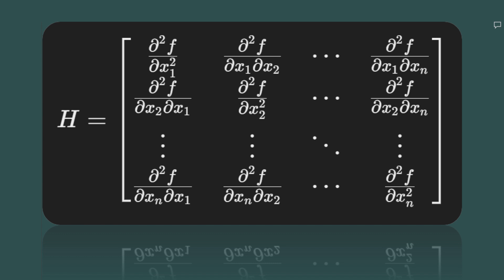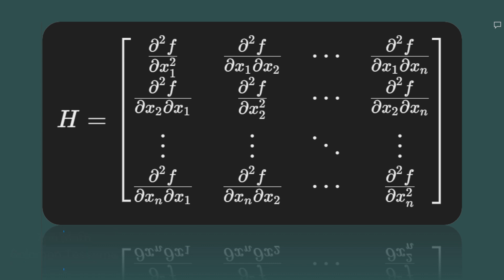Hi everyone, and welcome to this tutorial. Today, we're diving into the Hessian matrix, a powerful mathematical concept that captures second-order derivatives of scalar-valued functions. The Hessian is crucial in optimization and machine learning, especially for understanding curvature and refining model performance. Let's break it down step by step.